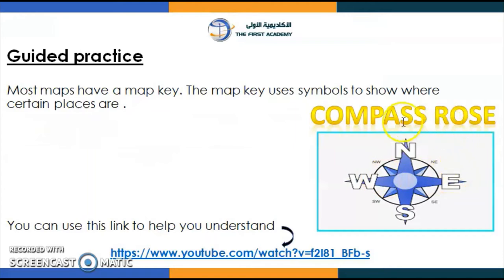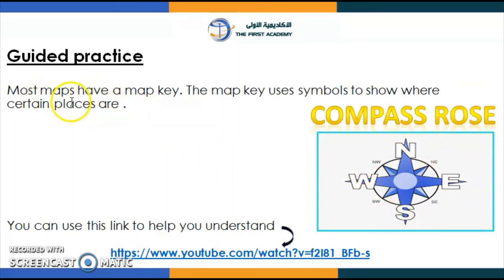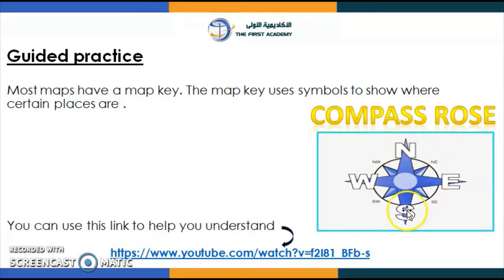I want you to look at this picture. Have you ever seen this before? We call this a compass rose. Here are the directions. Most maps have a map key — the map key uses symbols to show where certain places are. We can watch a video together to get some information about directions, the compass rose, and cardinal directions, because this is very important. You can see the compass rose on a map to show you the direction. Let's watch the video together.